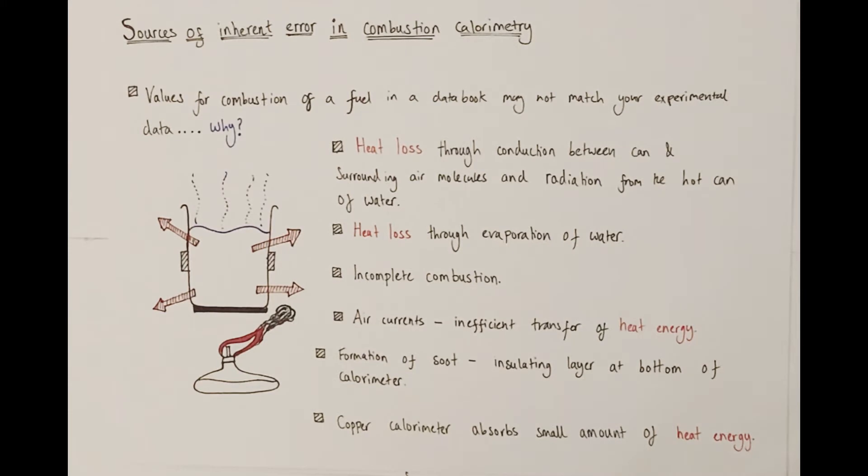There will also be some heat loss due to evaporation of water from the open top of the can. It is possible that some incomplete combustion will be taking place. The fuel may not be burning particularly efficiently in a sufficient amount of oxygen, and therefore incomplete combustion releases less energy than complete combustion, and you would not be able to account for that in your calculation. There may be some air currents causing the flame to billow around and therefore causing the inefficient transfer of heat energy from the burning flame to the copper can.